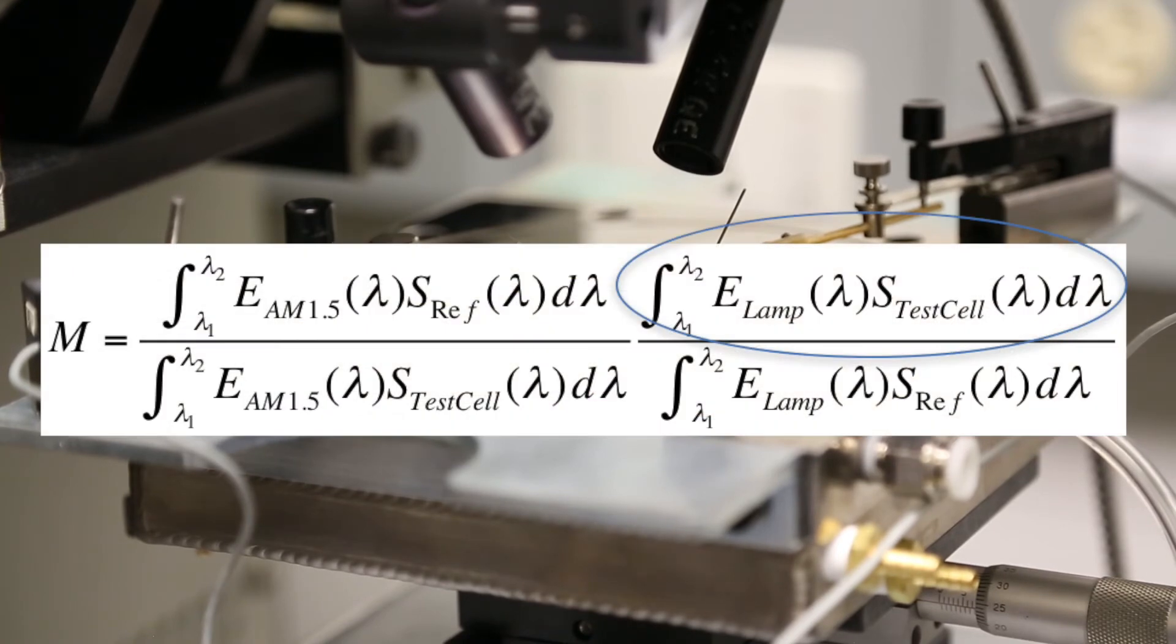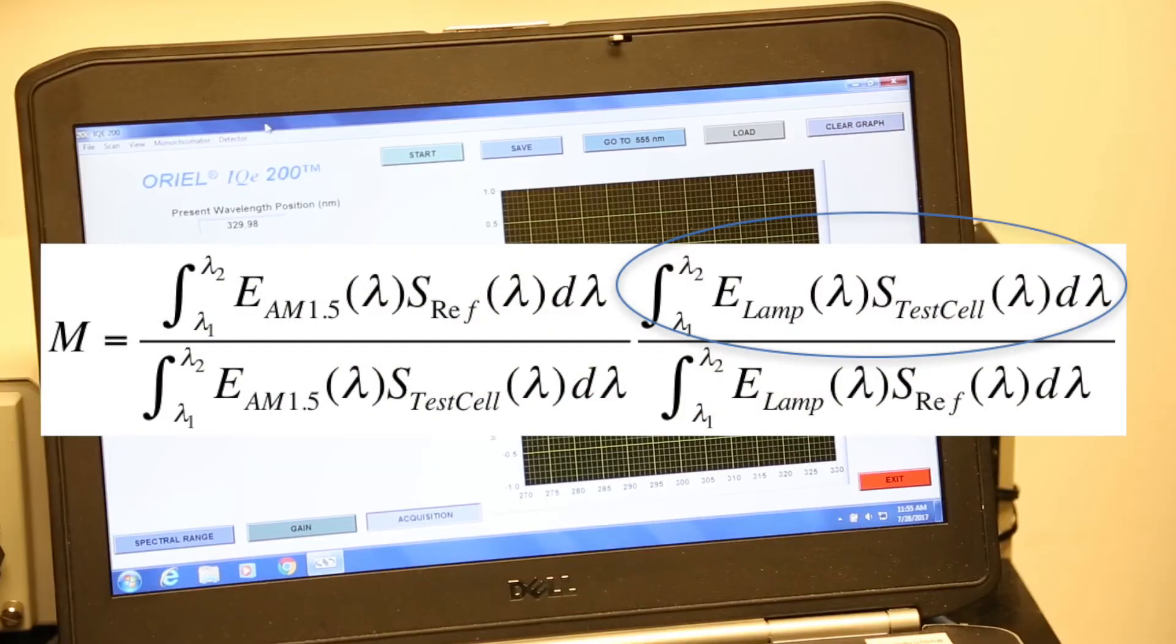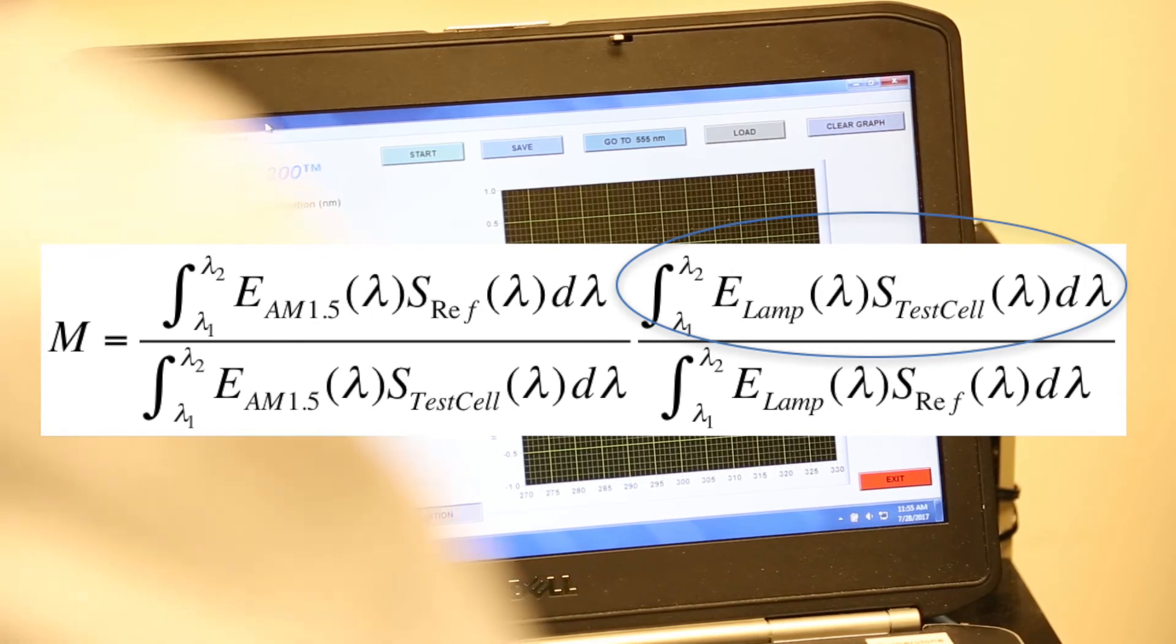Next step is to measure the external quantum efficiency of your test cell. Then you can calculate the SR, JSC, and ISC. We'll use this value later.